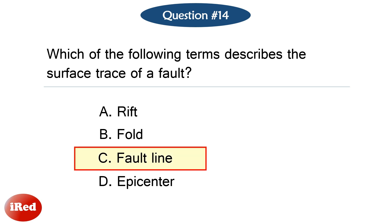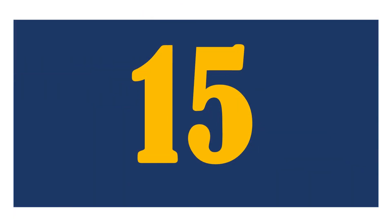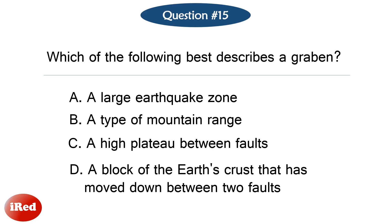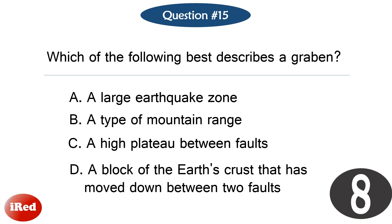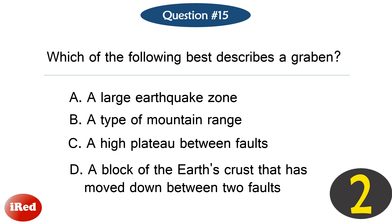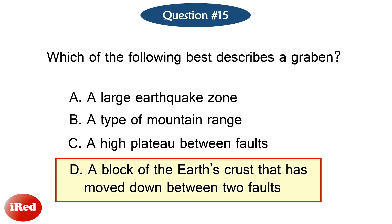Question number 14/15. The correct answer is letter C: fault line. The correct answer is letter D: a block of the Earth's crust that has moved down between two faults.